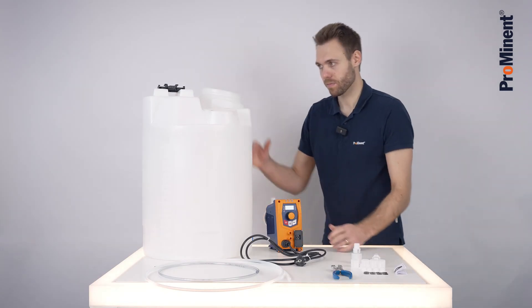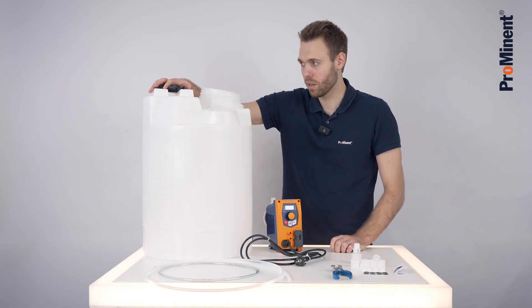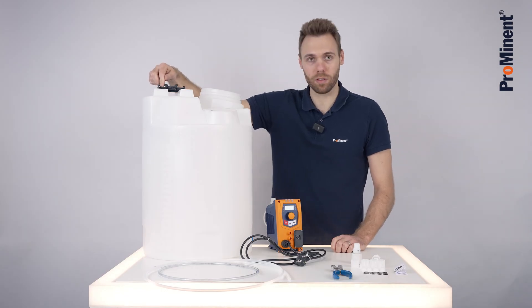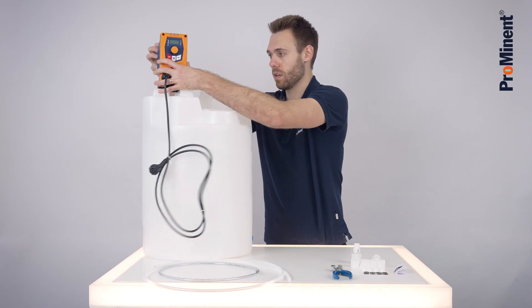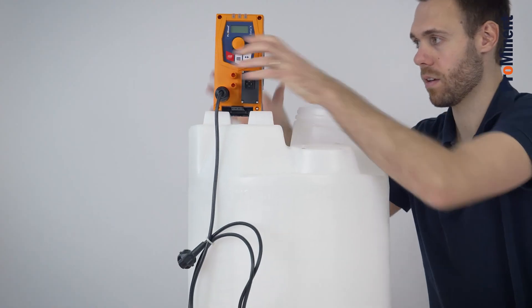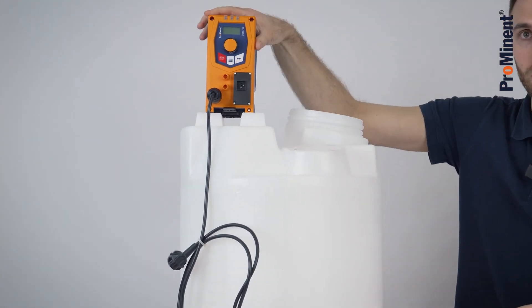First install the click foot on the tank and screw it on properly with screws. Take the Beta X and click it on the tank. It's now securely mounted.